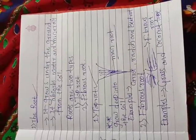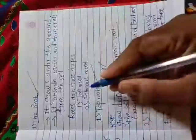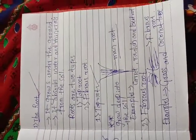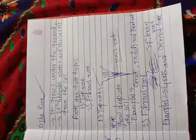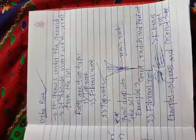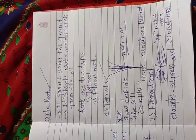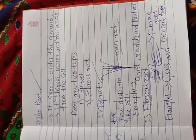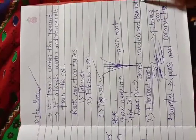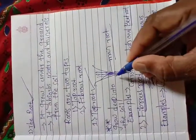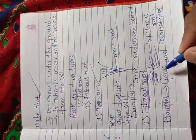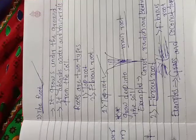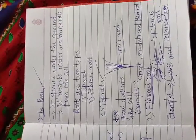In this class we learned one important part of the plant — root. It grows under the ground and absorbs water and minerals from the soil. We also studied two types of roots: taproot, which has one main root and grows deep into the soil (examples: carrot, radish, beetroot), and fibrous root, which has no main root, only bunches of small roots (examples: grass, coconut tree). Next class we will study about the remaining parts of the plant. Thank you, students.